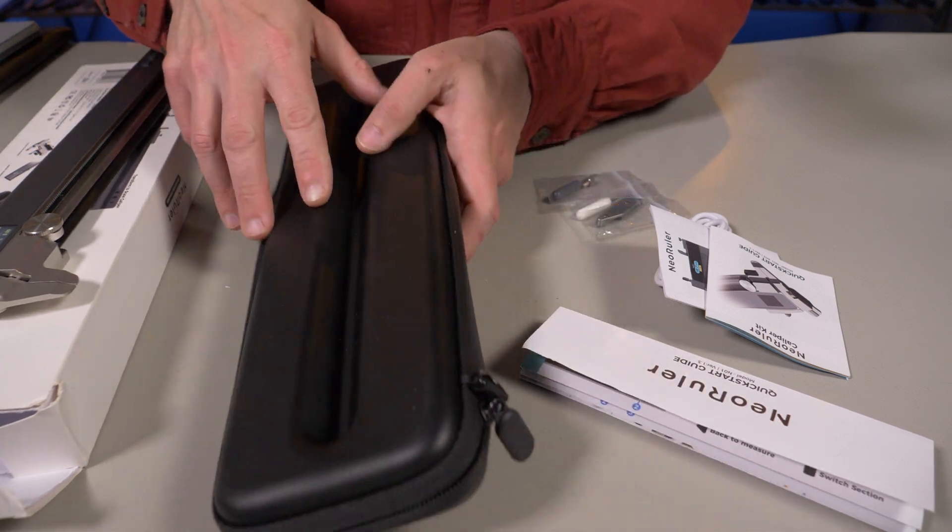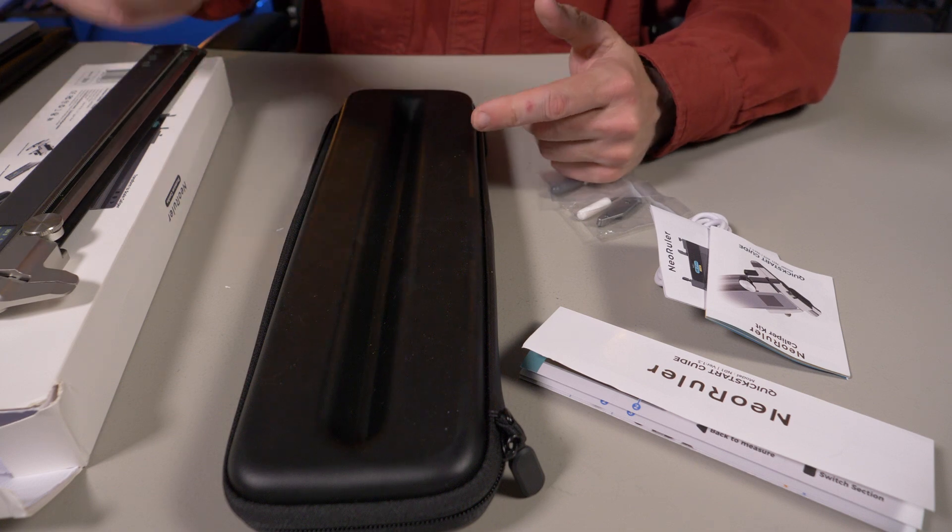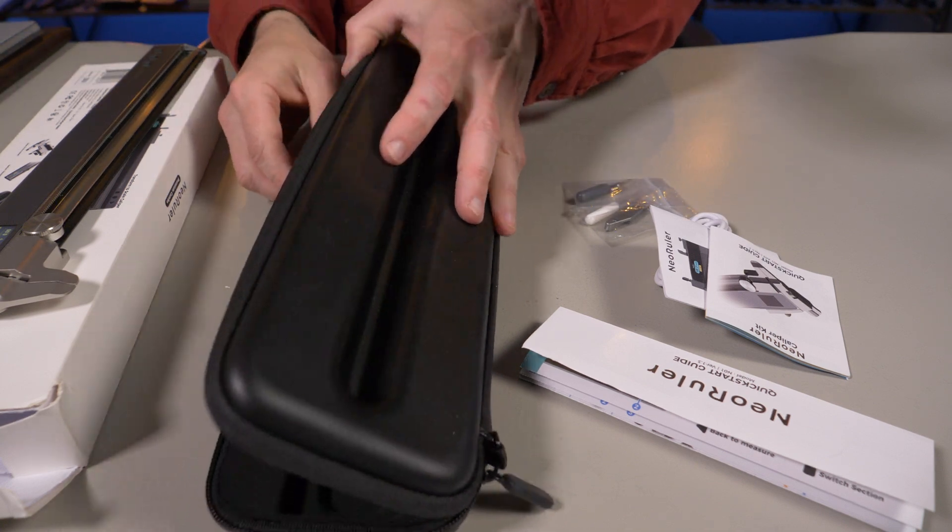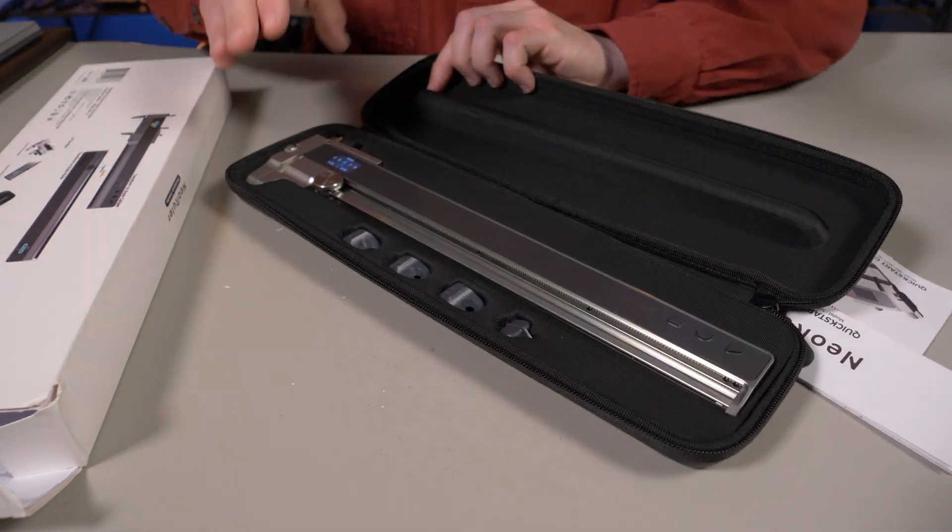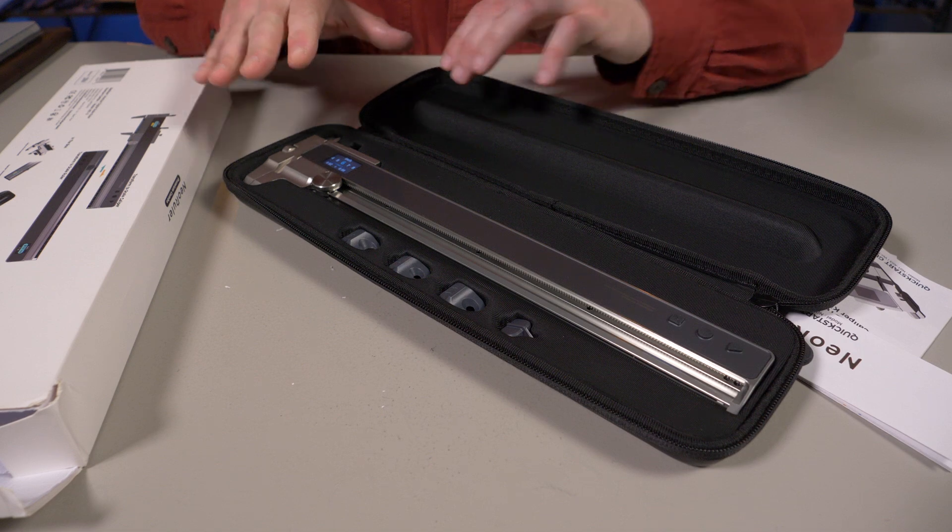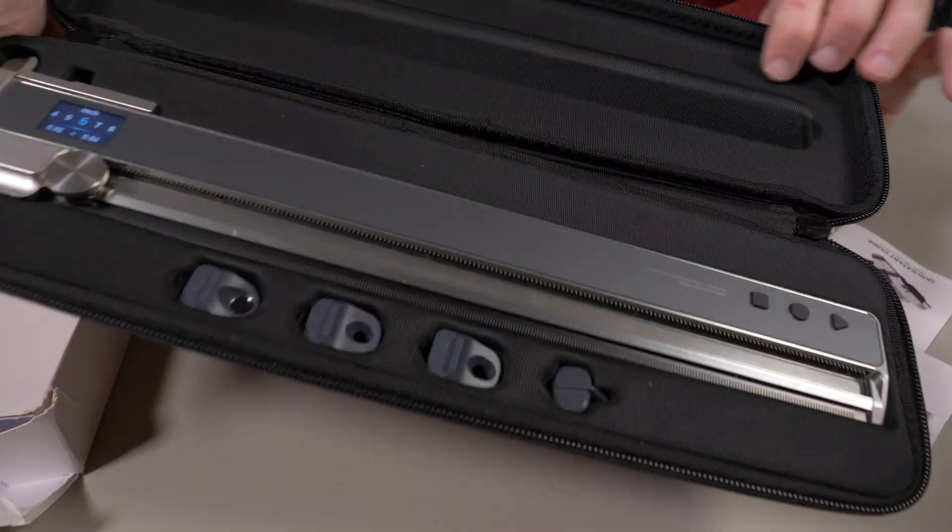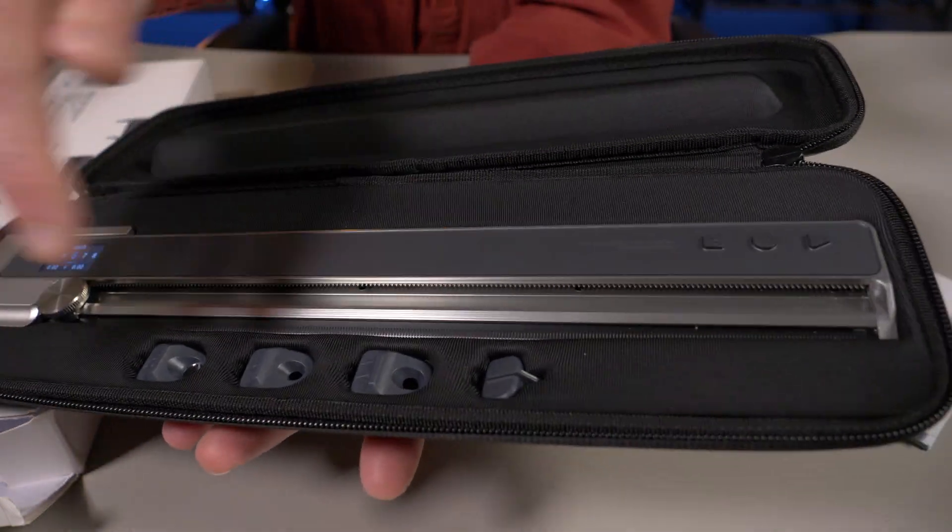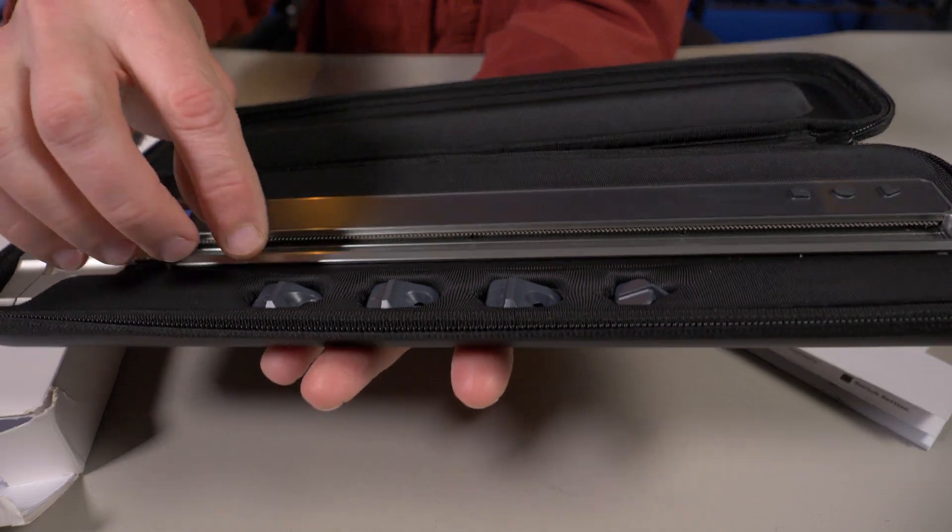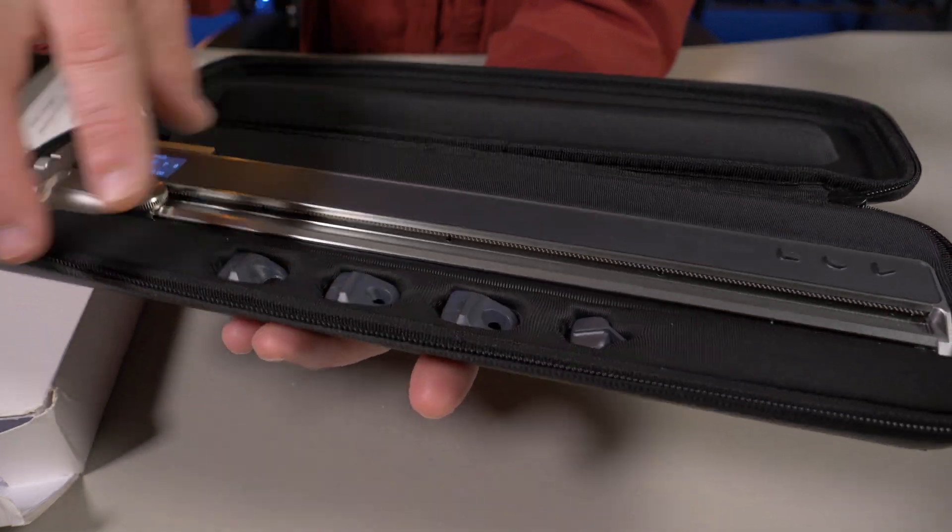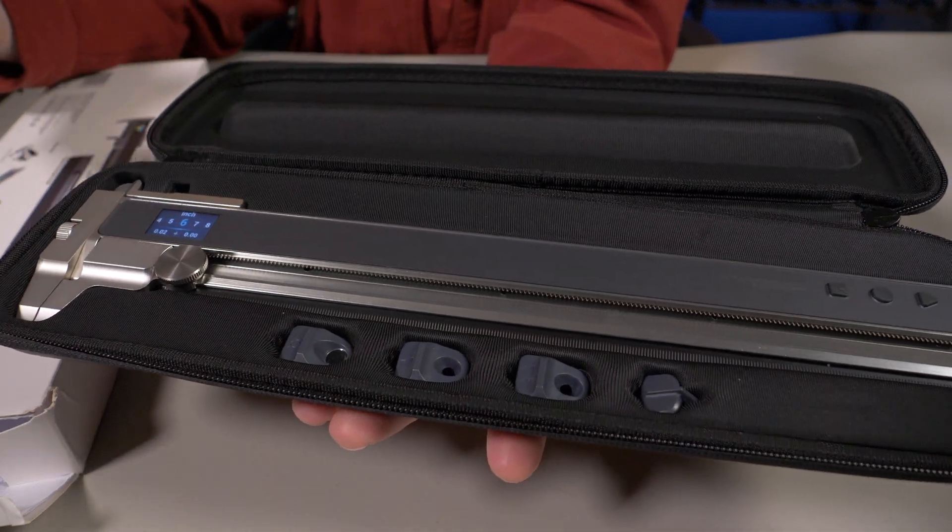If you want this case right here, this is another $59. There are a few other cases you can choose from on their website, but this one is a pretty nice one. You can see it just fits very nicely in there. This is a pretty pricey piece of tech, so get a case for it if you're going to grab the neo ruler. On the bottom you can see a couple other attachments. If I didn't have the caliper on there and was just using it as a ruler, you can have a couple of these little sliders right here to help do whatever you're trying to do with this thing.